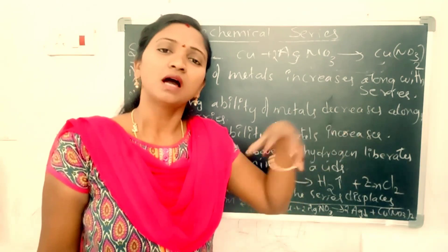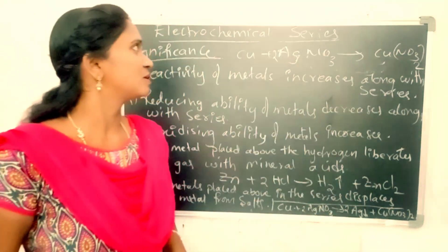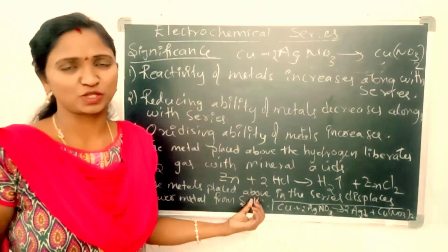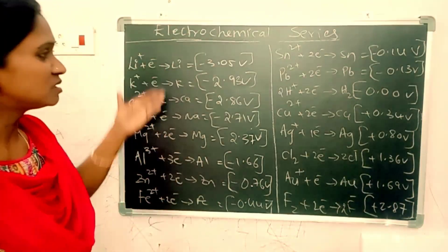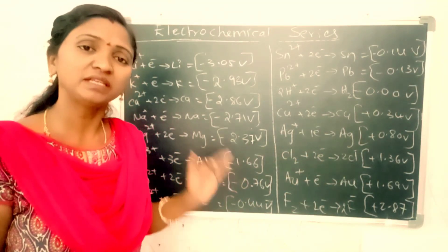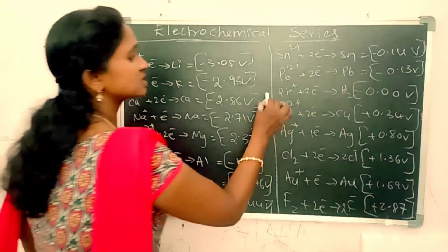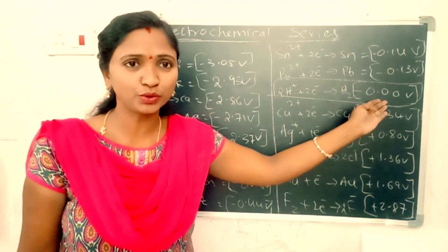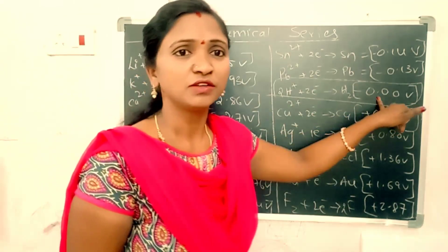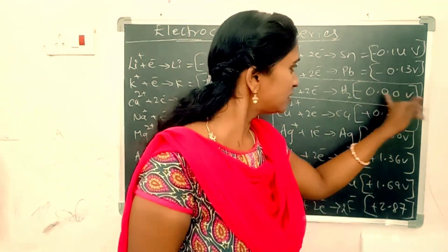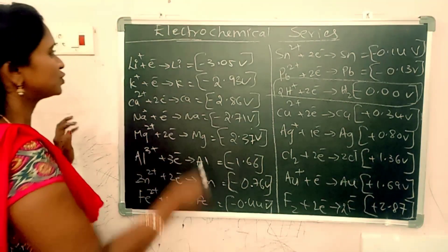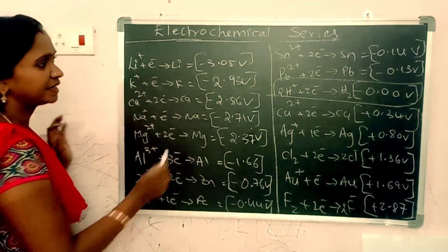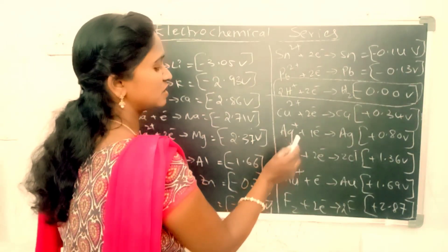So this is about the significance of the electrochemical series. Now let us see how the metals are arranged in the electrochemical series. These elements are arranged by increasing their standard reduction electrode potentials compared to the hydrogen potential as reference. The reference potential of hydrogen is 0.00 volt. The series is: lithium, potassium, calcium, sodium, magnesium, aluminum, zinc, iron, tin, lead, hydrogen, copper, silver, gold, and fluorine.